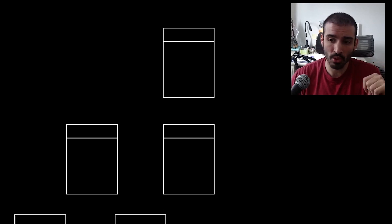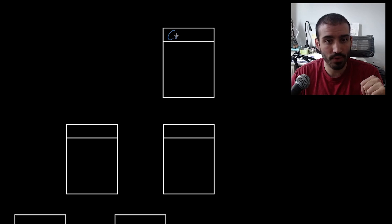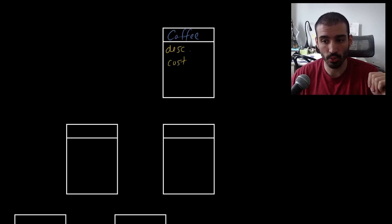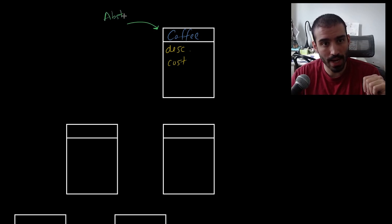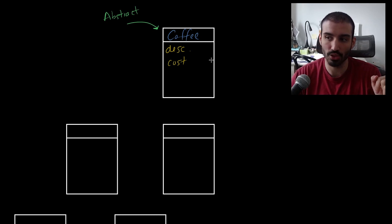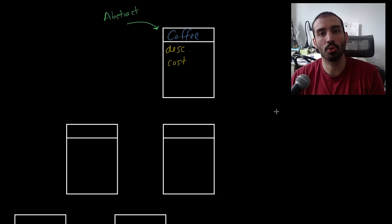Using the same example, we still have a coffee object with a description and cost, plus some accessor functions. In this version, the coffee class is going to be abstract — no one is actually going to instantiate an instance of it. It's just the template that subclasses need to use as their specification. From there, we'll have one subclass — I'll simplify to just espresso, but know this applies to all drink types.